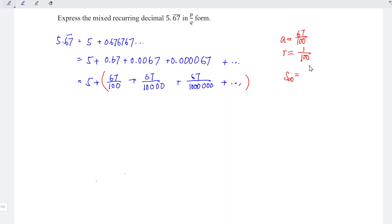This means that this series can be written as 5 plus A (67 divided by 100) over 1 minus r, which is 1 minus 1 over 100.